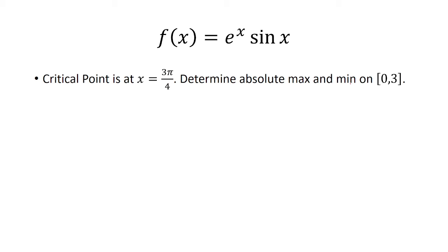Now we want to determine the absolute max and minimum on the closed interval from 0 to 3. So recall that the derivative was given to us as this, or we solved it as that.